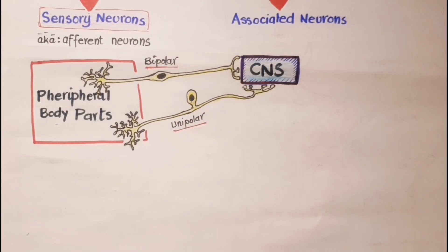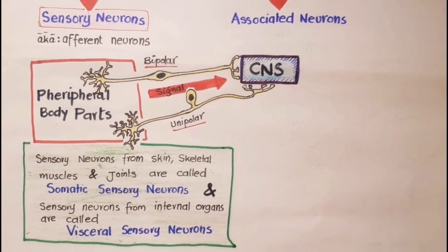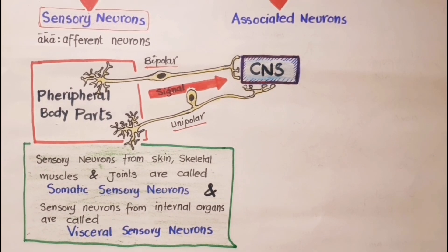The impulses travel along sensory neuron axons which lead to the brain or spinal cord, where other neurons interpret the impulses as a sensation. Sensory neurons from receptors in the skin, skeletal muscles, and joints are called somatic sensory neurons, and those from receptors in internal organs are called visceral sensory neurons.